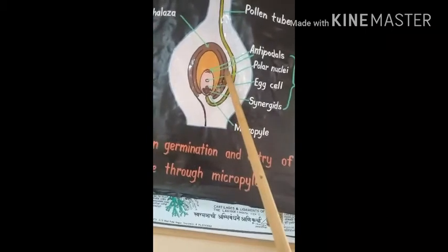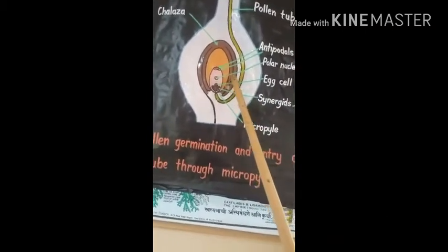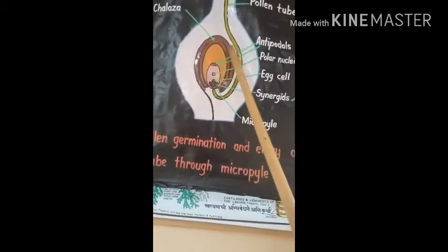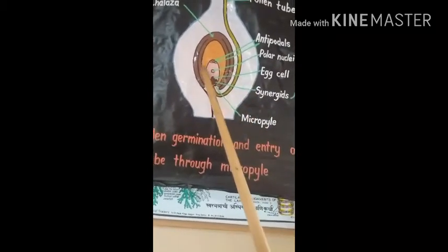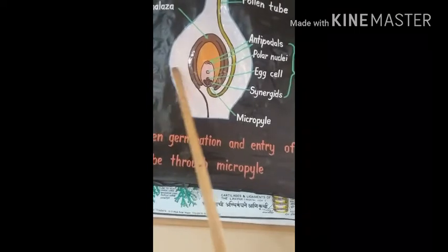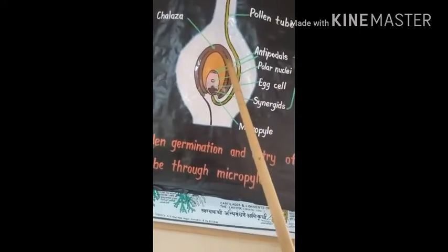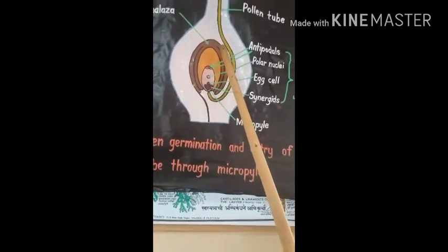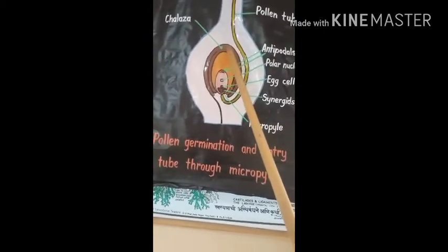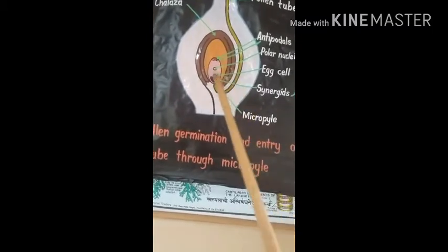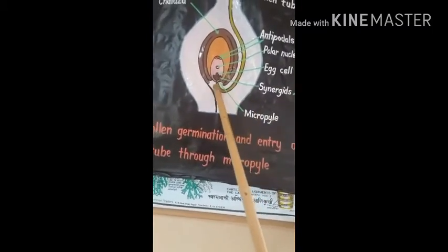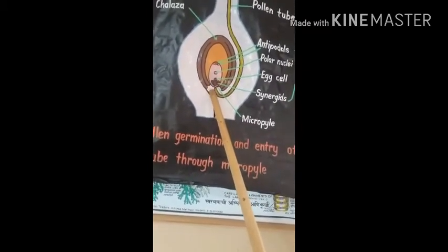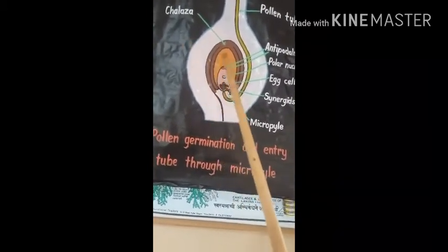This one is the female gametophyte and its structure is like this. In this structure, the brown color part shows its covering, which is actually called the integument. The structure of the female gametophyte is divided into almost two parts: this part is called the chalaza, and in front of it is the micropyle. This opening shows the presence of the micropyle. So this part is the micropyle and this part is the chalaza.